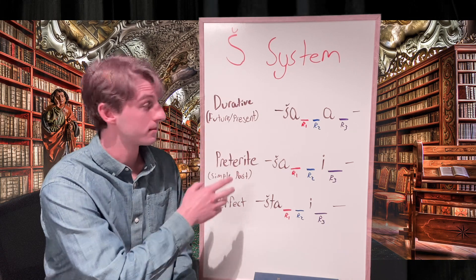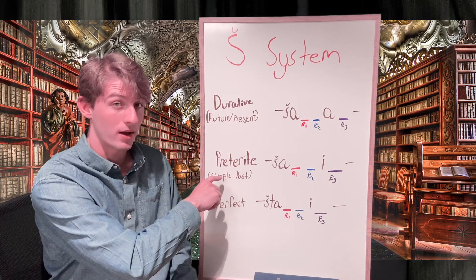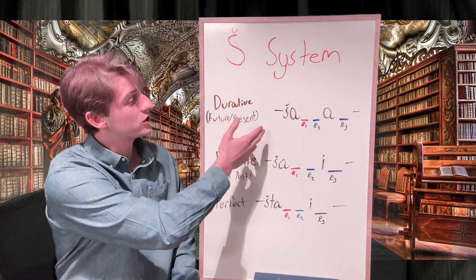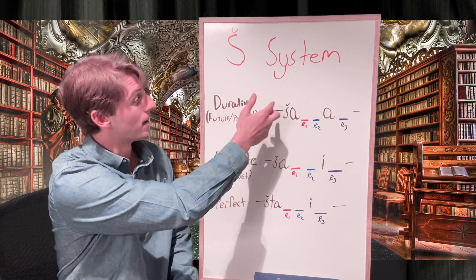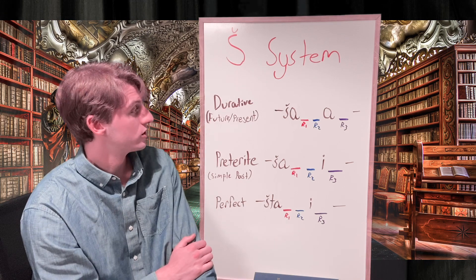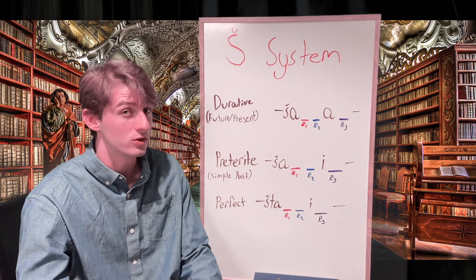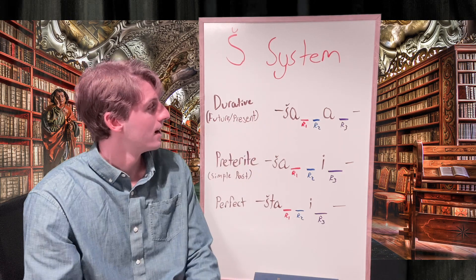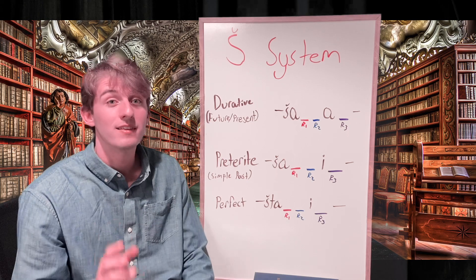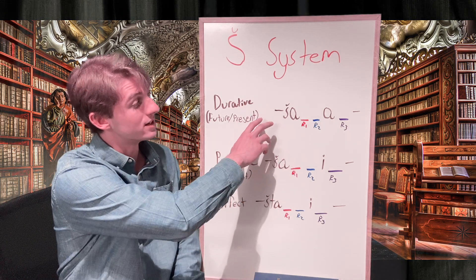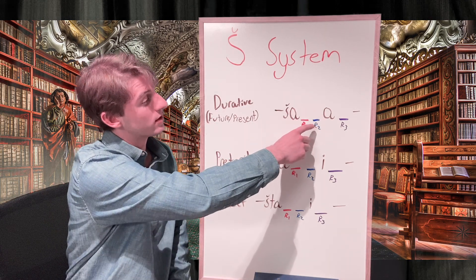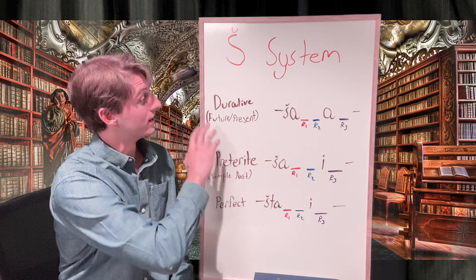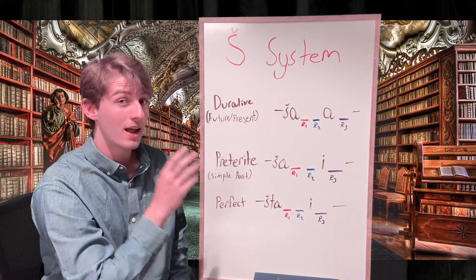Here I have our three main tenses for Sheen system verbs: durative (future/present), preterite (simple past), and perfect. I've added dashes where we add our prefixes and suffixes to the stem. Each Sheen system verb features a Sheen at the beginning of the stem followed by an A, always before the three root letters — so if you see this first consonant is a Sheen, double-check that it's part of the stem rather than a root letter. There's also no thematic vowel in the Sheen system: an A between the second and third root letter marks the durative, while an I marks preterite or perfect, and we look for the perfect T to differentiate.